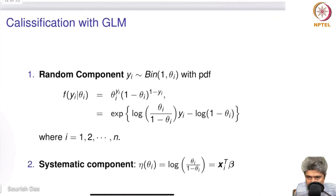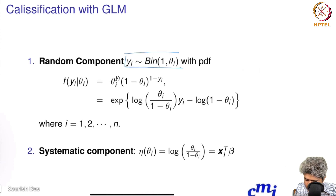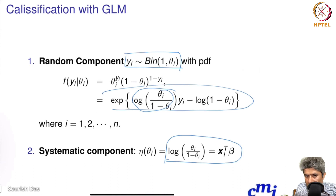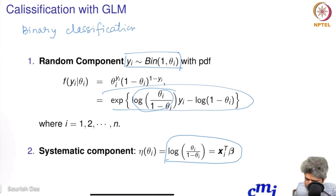For binary classification, if yi follows Binomial(1, θi) or Bernoulli(θi), the canonical form gives log(θi / (1 − θi)) = xi^T * β — the logit link. Therefore, binary classification is also a special case of GLM.